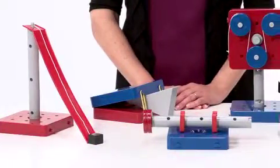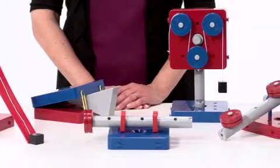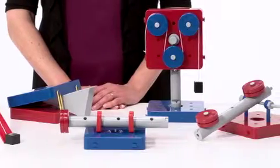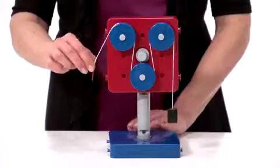The Simple Machine Set comes with enough pieces to build a pulley, lever, axle, inclined plane, wedge, and wheels that can all be constructed at the same time.